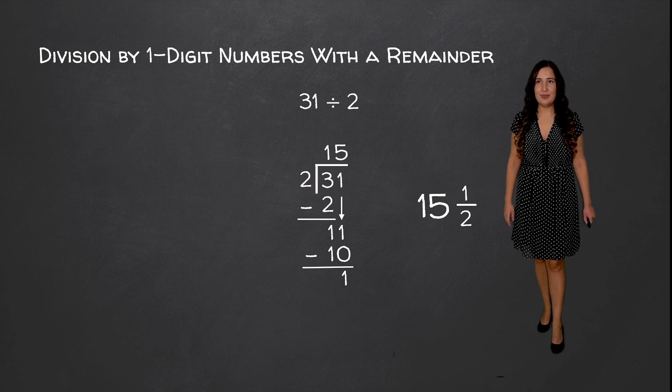Then we bring down our next digit which is also 6, and we need to see how many times 3 goes into 6. We know that's 2 because 3 times 2 is equal to 6. So we write another 6 down here and subtract — 6 minus 6 is equal to 0. Now we bring down our next digit which is 2. We need to figure out how many times 3 goes into 2, and that's 0 times because 3 times 0 is 0, but 3 times 1 is 3 which is too large, so we add our 0 here.